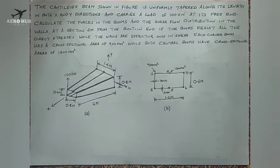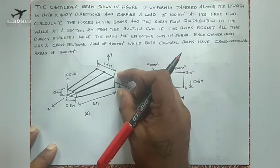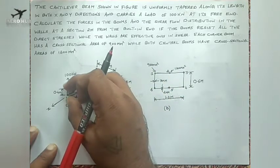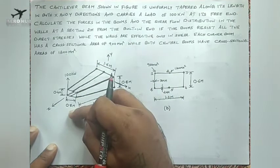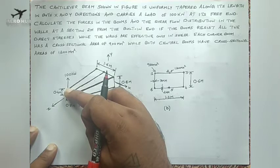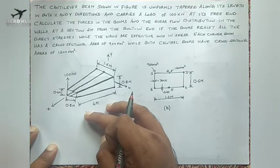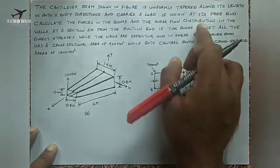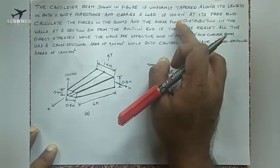Welcome back to AeroHub and welcome to the series of lectures in aerospace structures. In this lecture we will solve a typical problem for a tapered wing. You can see in the figure we have a tapered wing section fixed at one end, with the end section height of 0.8 meter and at the free end the height is 0.4 meter. The length is 1.6 meter at the fixed end and 0.8 meter at the free end, and we are applying a load of 100 kilonewton vertically upwards. The total length of the beam is 4 meters, and this beam is uniformly tapered along its length in both x and y directions, carrying 100 kilonewton at its free end.